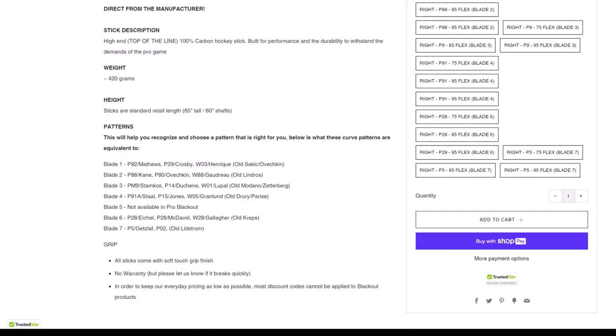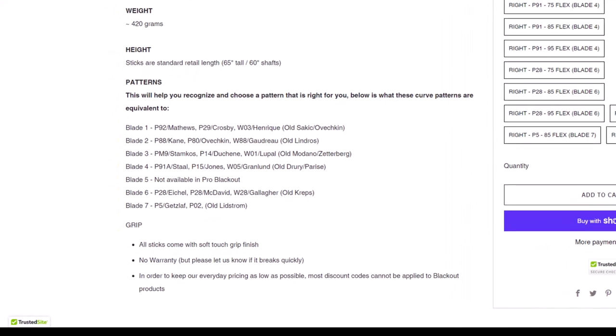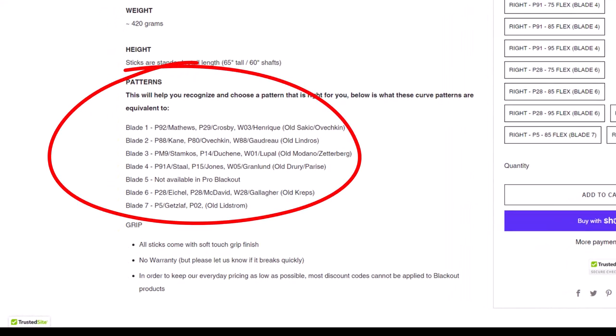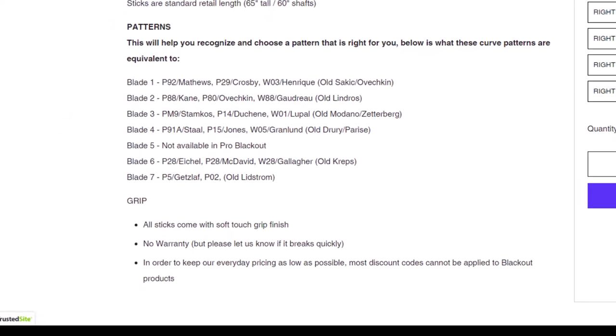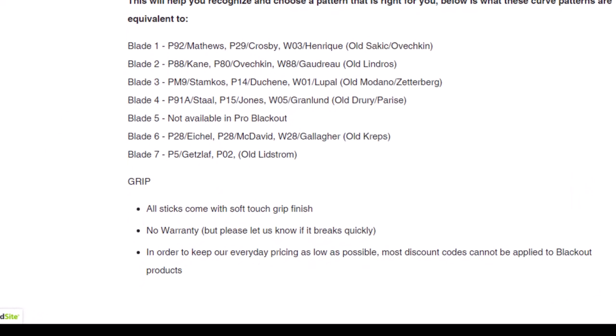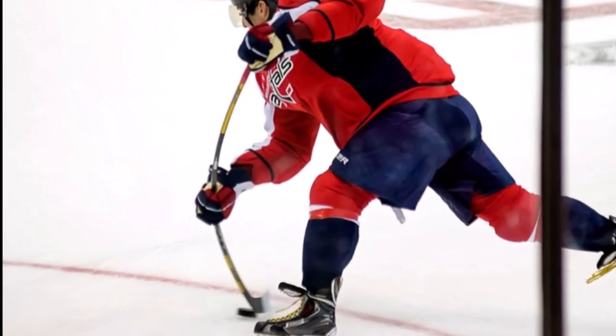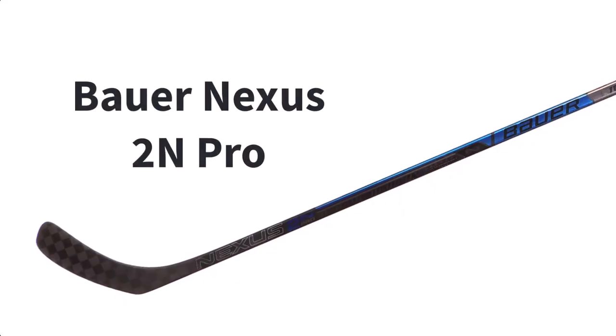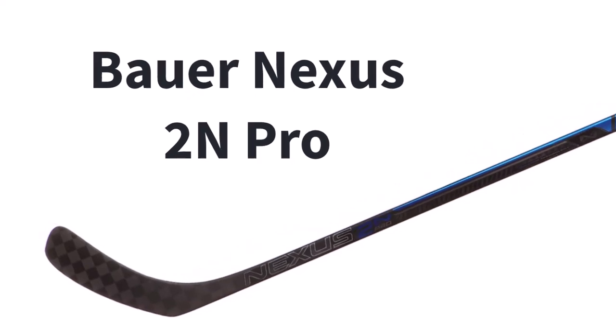And similar to the Light sticks, these are offered with a nice variety of curves and a soft-touch grip finish. No warranty on these, but let them know if it breaks quickly. The Standard Pro Blackouts have a hybrid kickpoint, meaning the stick will flex where your lower hand is when shooting. These sticks are most comparable to the Bauer Nexus 2N Pro for kickpoint, weight, and material.